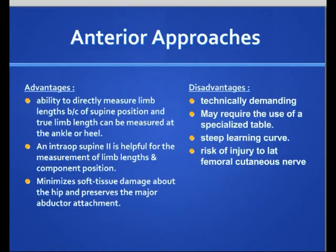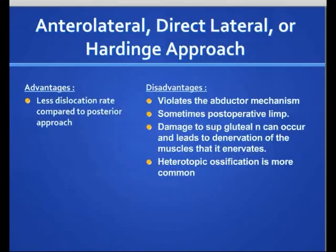The Hardinge approach has a less dislocation rate compared to the posterior approach. However, it violates the abductor mechanism, and some patients might have a post-operative limp because of that. There is also a risk to the superior gluteal nerve that might lead to deterioration of the muscles it supplies. Additionally, heterotopic ossification is more common with this approach.